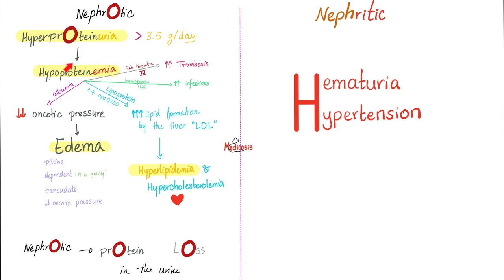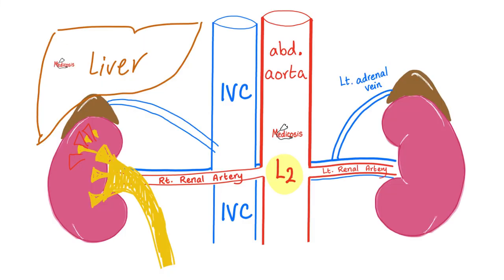These proteins being lost in the urine include antithrombin 3. When you lose antithrombin, you get thrombosis — especially if you have membranous nephropathy. In fact, membranous nephropathy is the nephrotic syndrome that causes clotting the most. So membranous nephropathy is a nephrotic syndrome where you're losing antithrombin 3 in the urine, and that's why you're getting thrombosis.